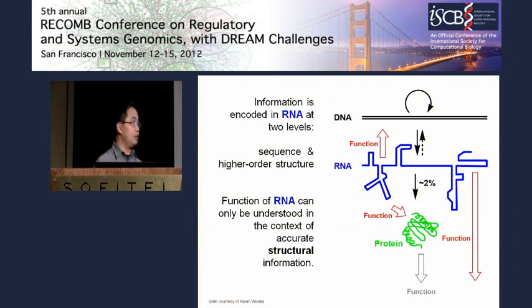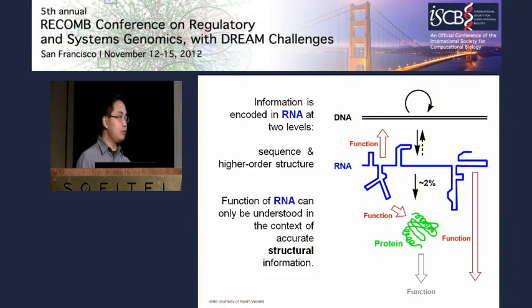Thinking about RNA, we know that information is encoded at two levels: at the level of sequence and also at the level of structure. That's because RNA has the unique capacity to base pair with itself and with other biomolecules to form complicated shapes. We can only have a full understanding of the regulatory information when we describe an RNA's structure.